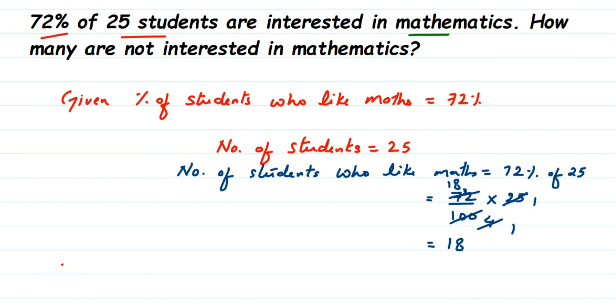So therefore, number of students not interested in mathematics is equal to 25 minus 18, which will be equal to 7. So 7 students don't like mathematics and 18 students like mathematics. That's it.